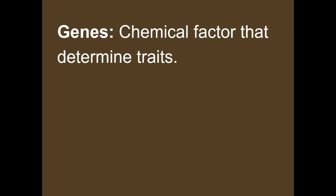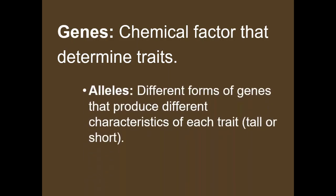Genes are the chemical factor that determines traits, and genes are found on your DNA. Alleles are different forms of genes — they produce different characteristics of each trait. So you could have alleles for tall or short, alleles for eye color, or alleles for skin tone.